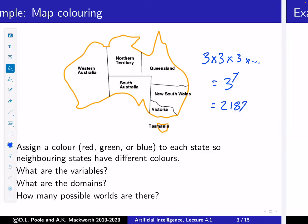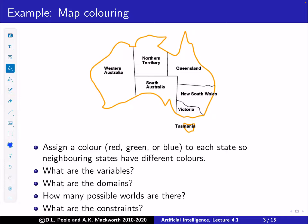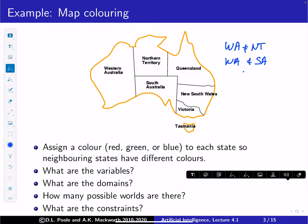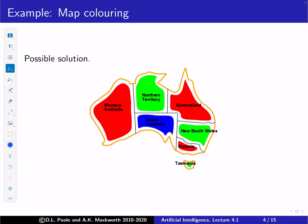The constraints are that neighboring states have to be different colors. For example, Western Australia ≠ Northern Territory, and Western Australia ≠ South Australia. There's a constraint for each border on the map.